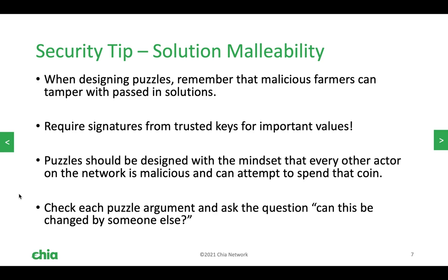One of the most common tools we use is checking signatures. What we call the basics or the vanilla transaction is a smart coin just like any other. The way it works is when it's created we embed a public key in that coin's puzzle from the user's wallet, so we know that this user and only this user has the secret key that corresponds to that public key.